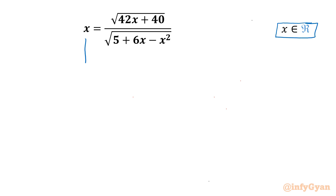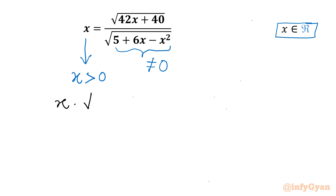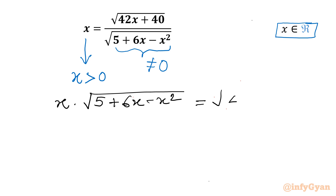We can conclude a few points just by observing this equation. This x should always be greater than 0, and the left-hand side denominator cannot be 0. Now I can cross-multiply the written terms, so I can multiply x with square root of (5 + 6x - x²) equal to square root of (42x + 40).